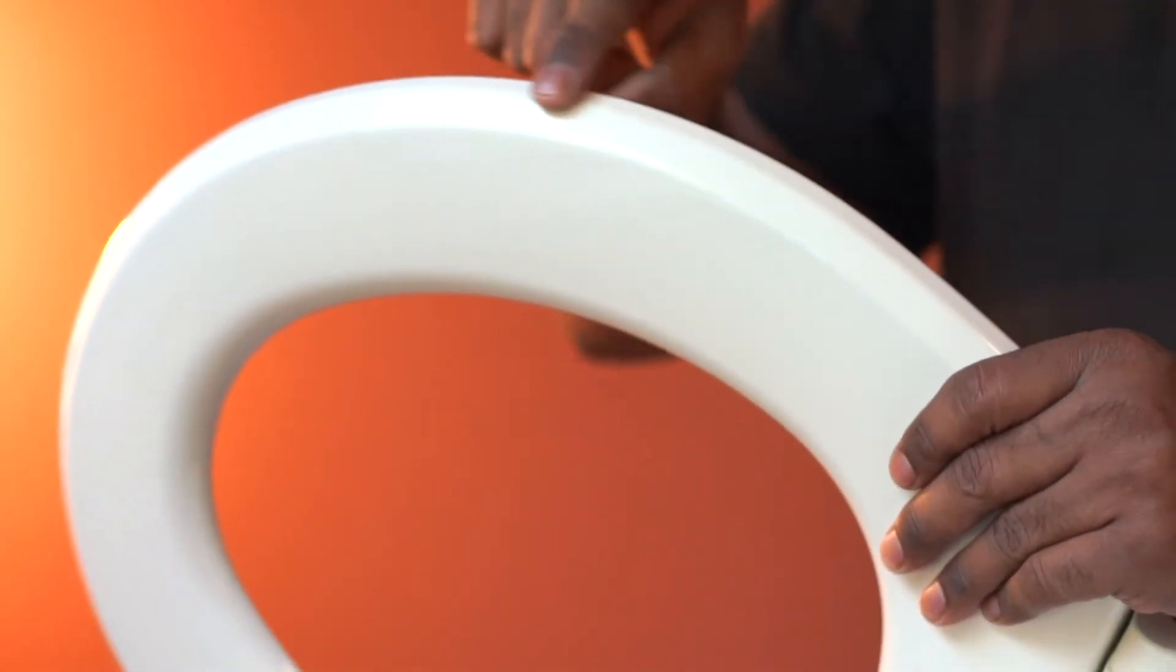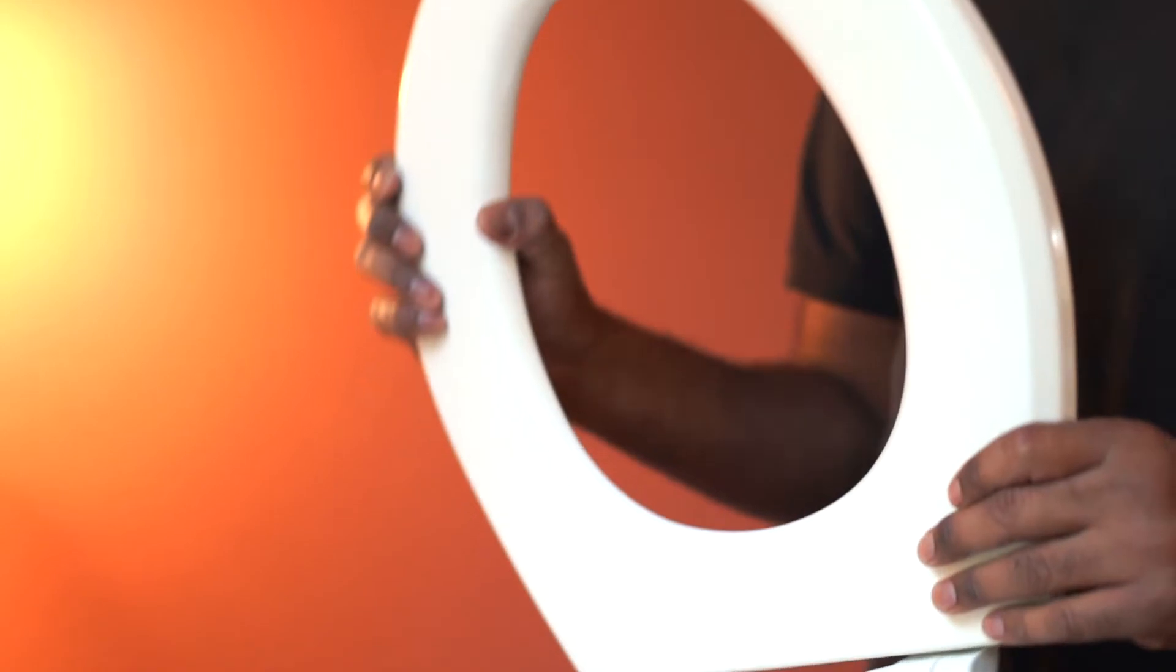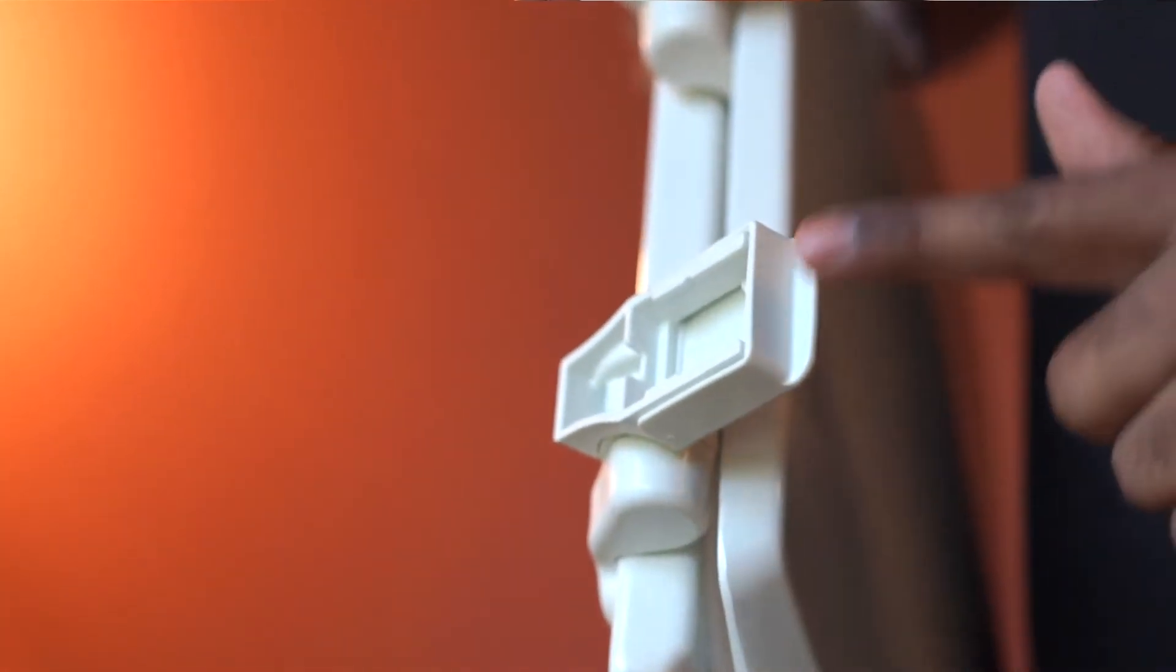Use mild soap and water to clean this toilet seat. You can easily remove these hinges for cleaning or replacement.